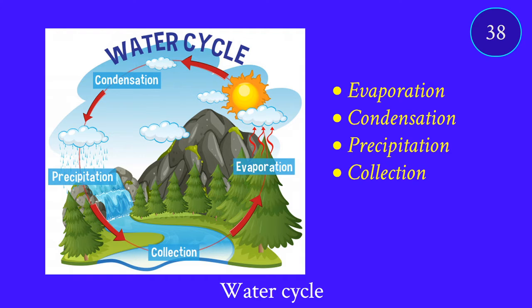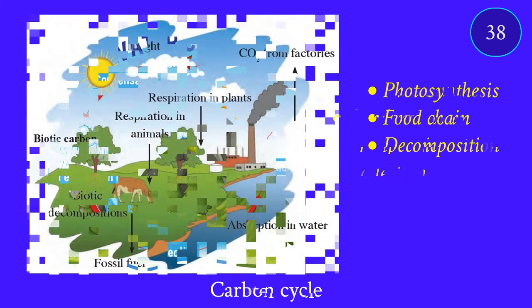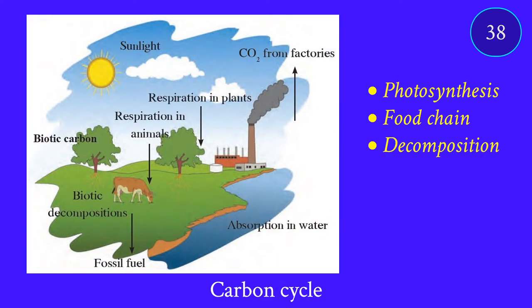The water cycle is one cycle. There are also other cycles, the first being the carbon cycle. The carbon cycle operates through both biotic and abiotic components.